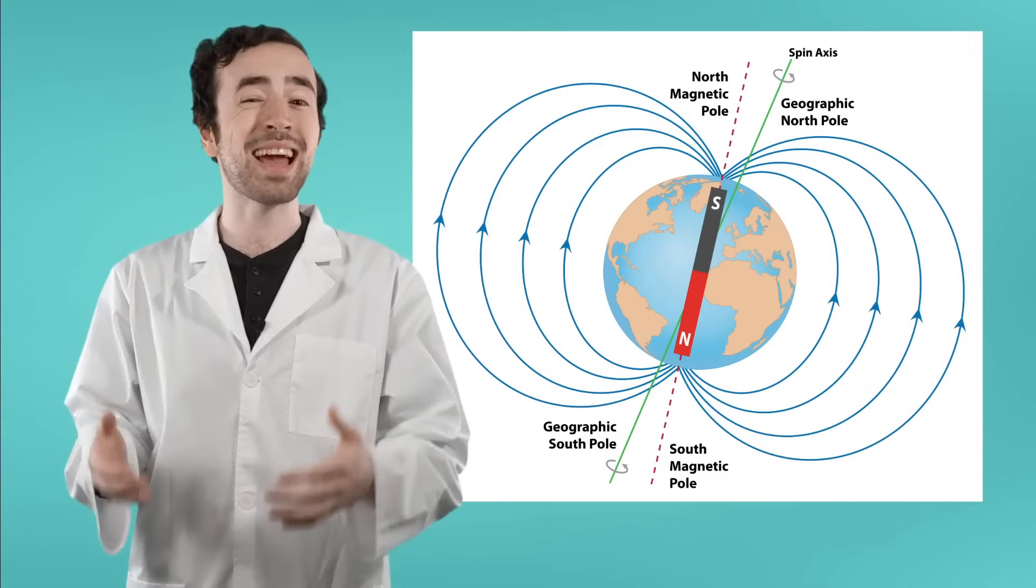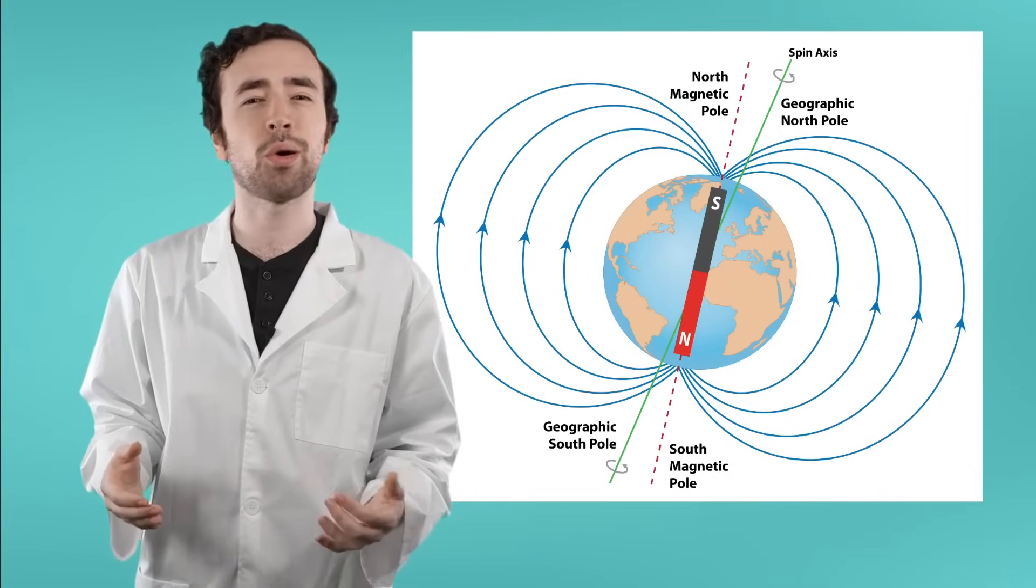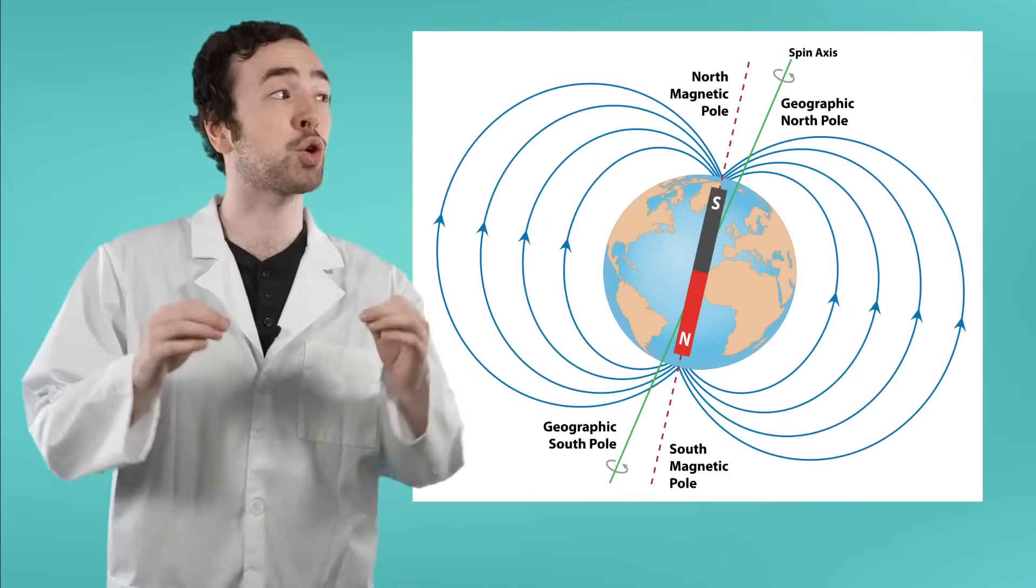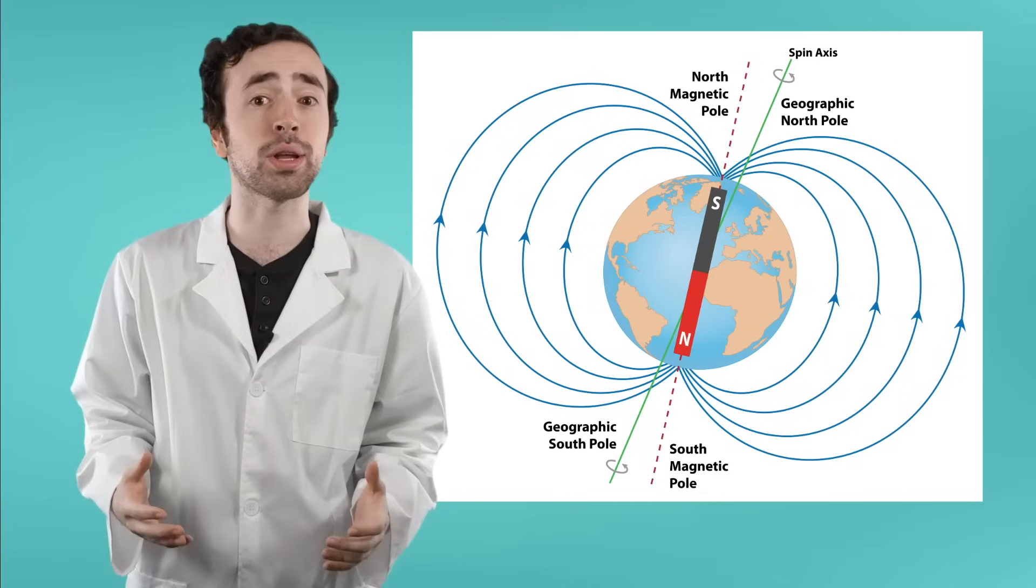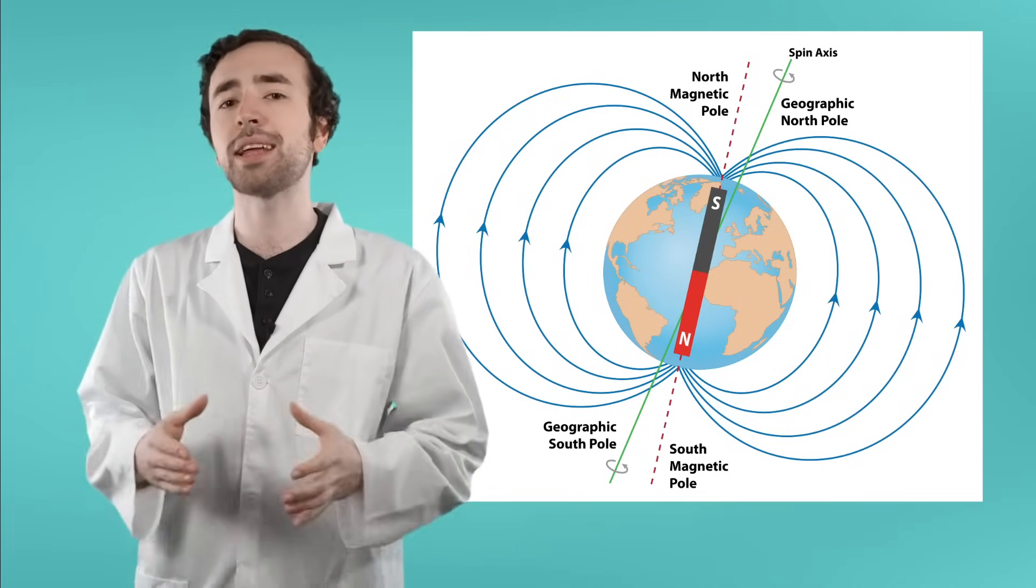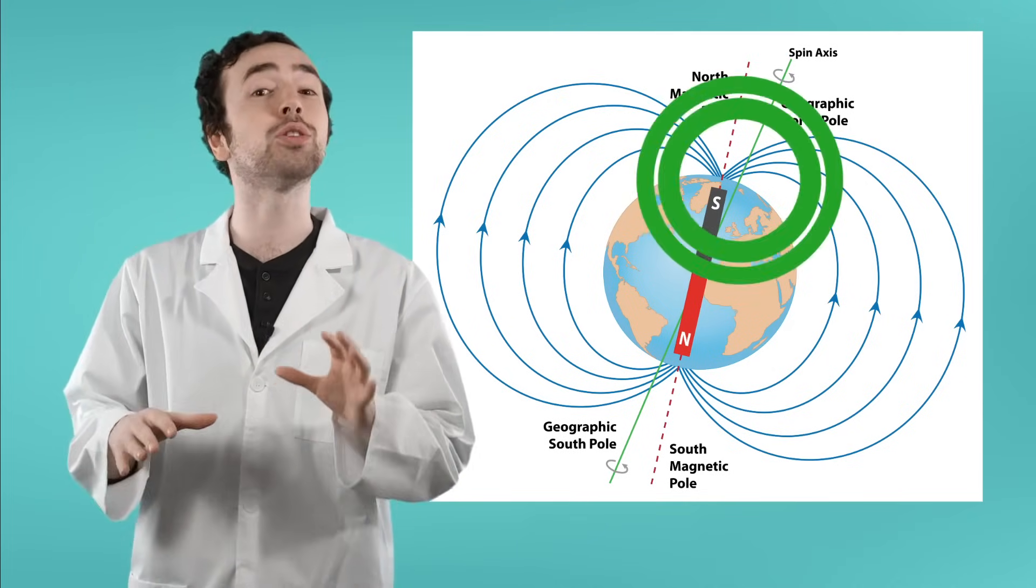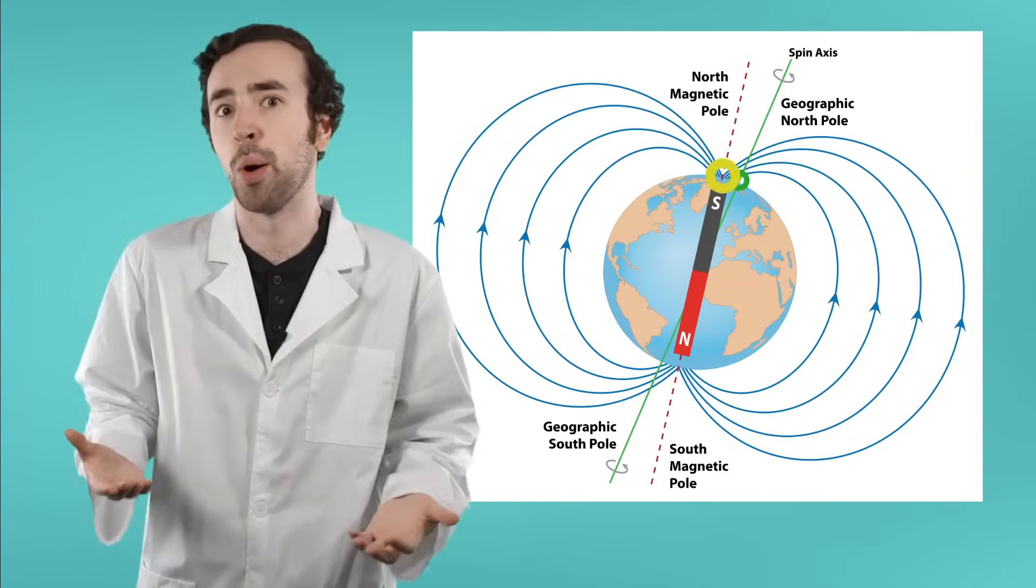Now, Earth's magnetic north and south pole aren't exactly where its geographic north and south pole are, but they're actually pretty close. Earth's magnetic north pole is about 500 miles away from the north pole.